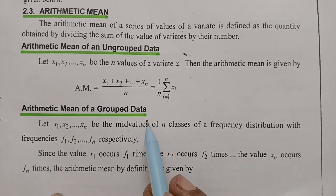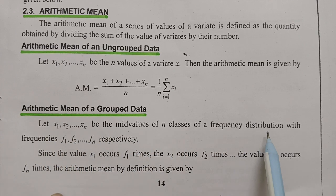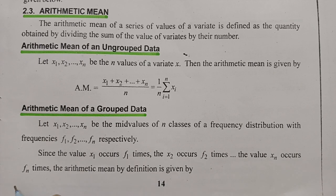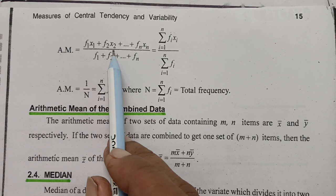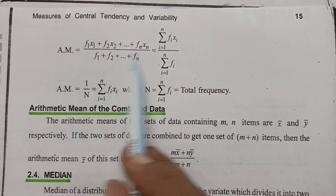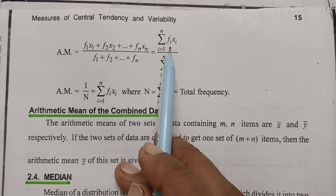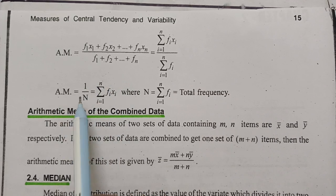For arithmetic mean of grouped data: let X1, X2, X3, ... Xn be the mid values of n classes of the frequency distribution with frequencies F1, F2, F3, ... Fn respectively. Since the value X1 occurs F1 times, X2 occurs F2 times, and Xn occurs Fn times, the arithmetic mean by definition is: AM = (F1·X1 + F2·X2 + ... + Fn·Xn) / (F1 + F2 + ... + Fn) = Σ(i=1 to n) Fi·Xi / Σ(i=1 to n) Fi.